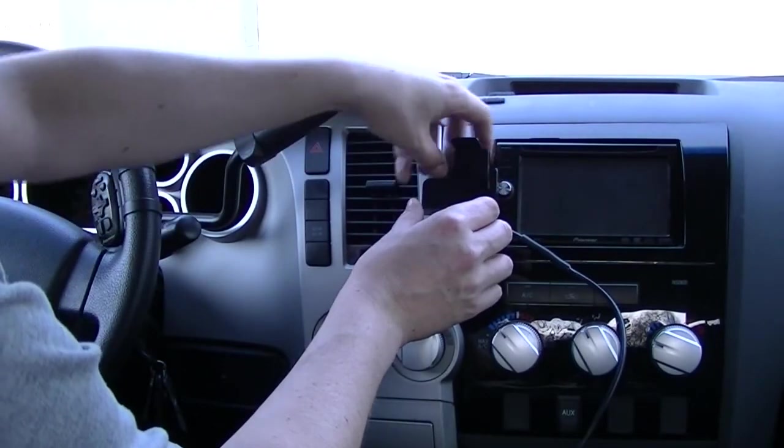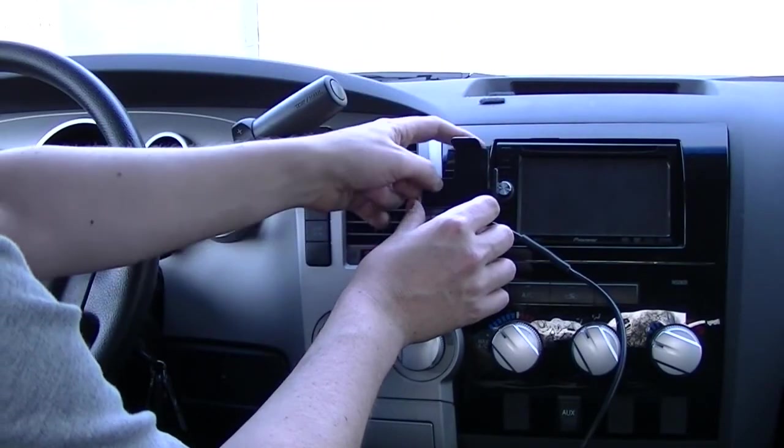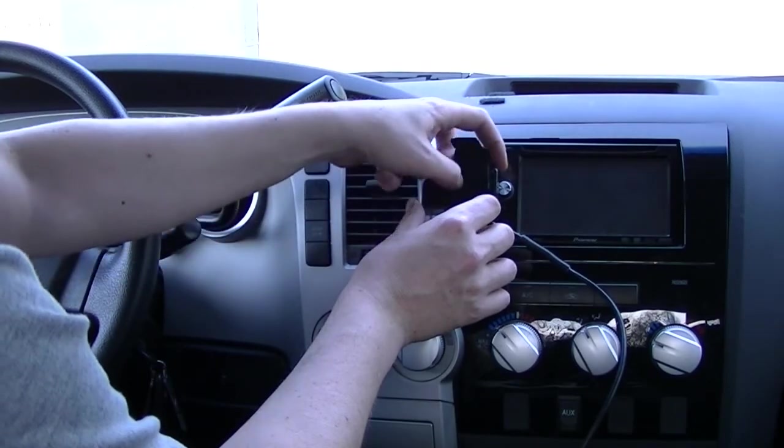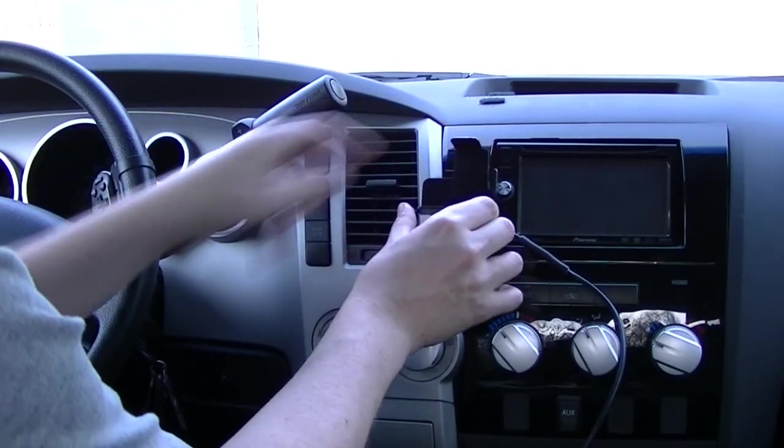What you do to tighten it up is you twist the dog bone counter-clockwise towards the back of the dock. And then that cinches it tight.